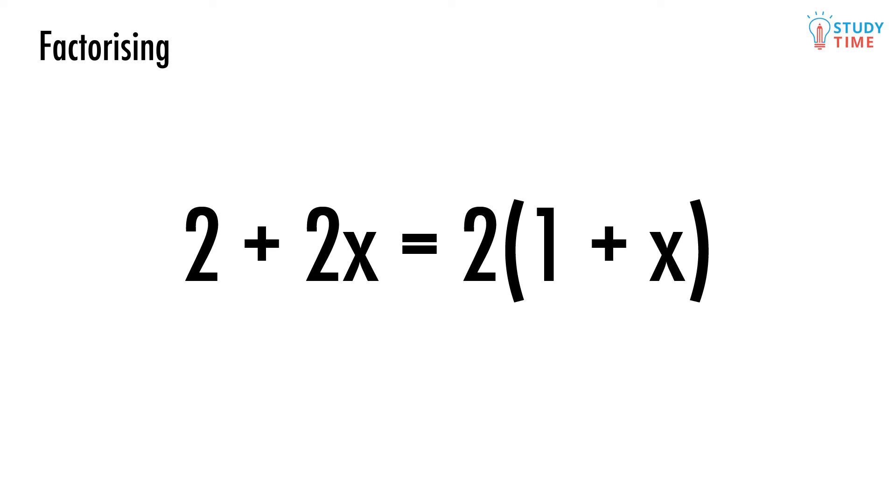If we had 2 plus 2x, we could factorize it by writing it like this instead. We say that 2 is a common factor of both 2 and 2x, which means we can cleanly divide both of these by 2. This is all that factorizing is.